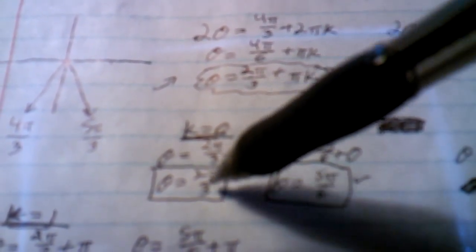All right, so you're going to solve for theta. Plug in 0 for k. You get 2 pi over 3 and 5 pi over 6 using both of those.